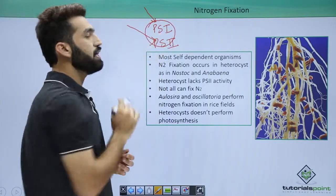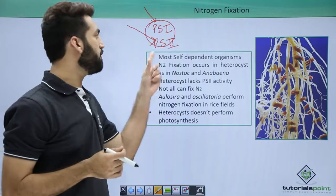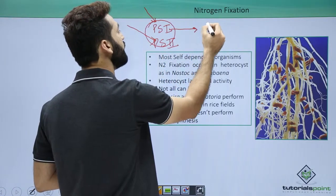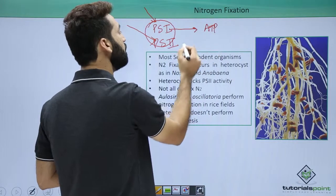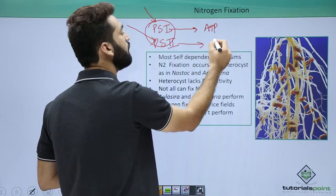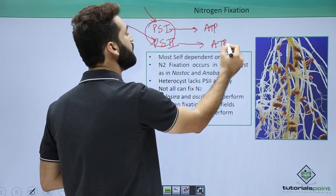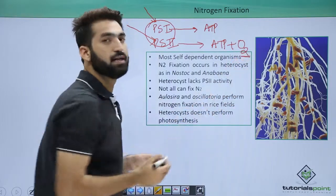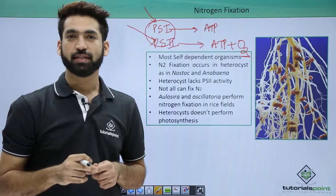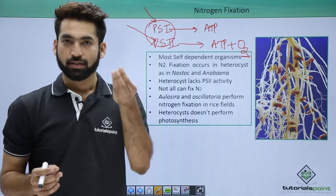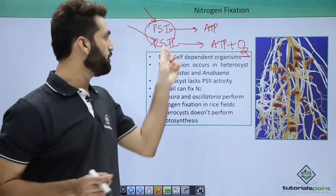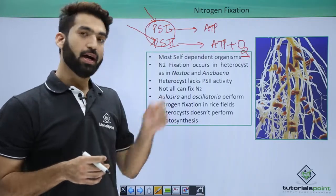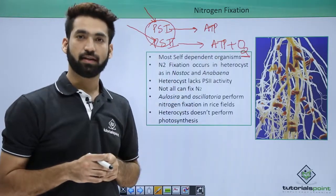When PS1 traps light it makes ATP. When PS2 traps light it also forms ATP, but apart from ATP, oxygen evolution takes place during PS2 reactions. So the oxygen coming out during photosynthesis comes specifically from PS2 reactions.